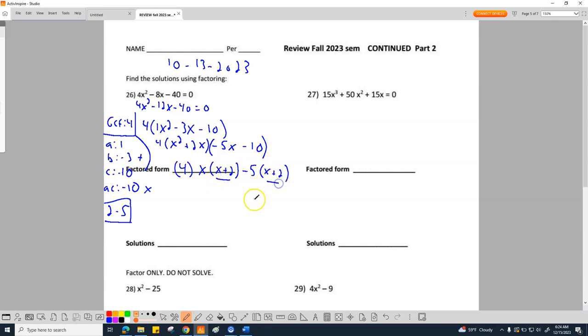So, these 2 should match. That means you're doing it right, which they do. So, my factored form is 4, and then I have an x plus 2, and then I have an x minus 5. And that's the full answer for that problem.